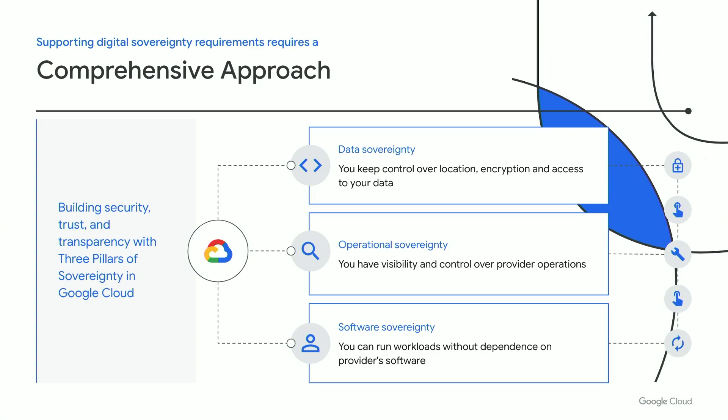The first pillar is data sovereignty — giving customers full control over core customer content. We want to provide the ability to store and manage encryption keys outside of the cloud environment, so that customers can protect their data while enjoying the scale, security, and innovation of public cloud. The second is operational sovereignty, which goes one step above data sovereignty and gives customers or their trusted local partners direct visibility and, if needed, even control over Google Cloud's operations, including the ability to limit and control access for support personnel based on predefined attributes such as citizenship or geographic location.